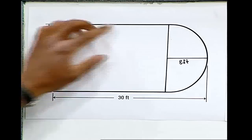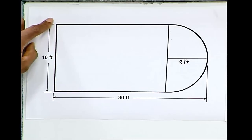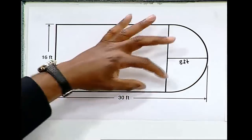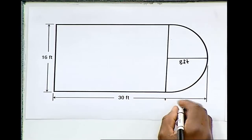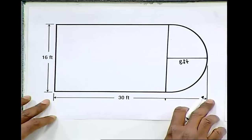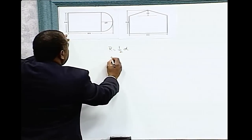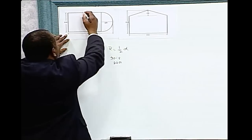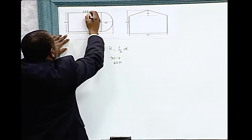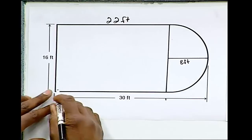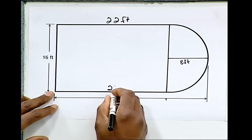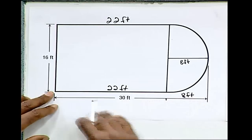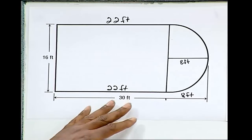In order to find this side of the rectangle, we would subtract thirty minus eight, because from this point across is eight feet and the entire line is thirty feet. If we subtract thirty minus eight, we'll get twenty-two feet. This side will be twenty-two feet — from this point to this point, twenty-two feet. This part is eight feet. The entire line is thirty feet.